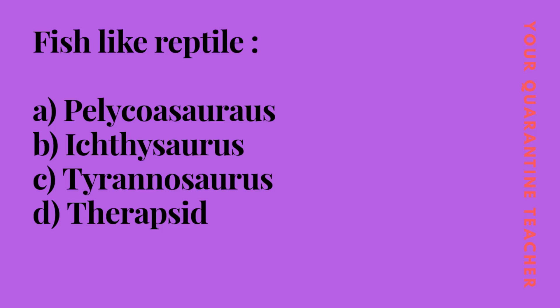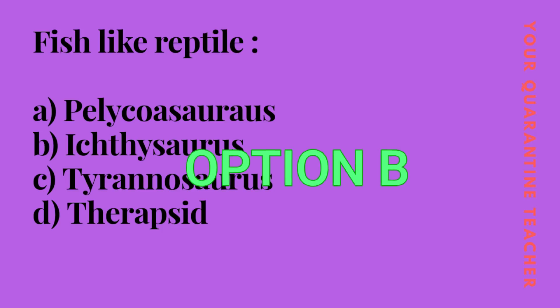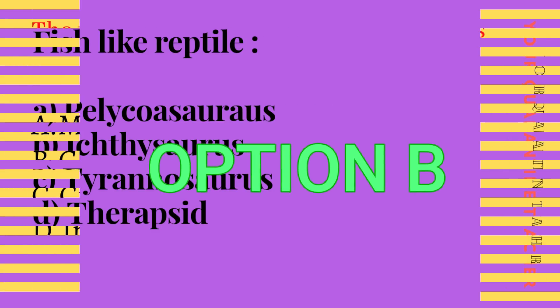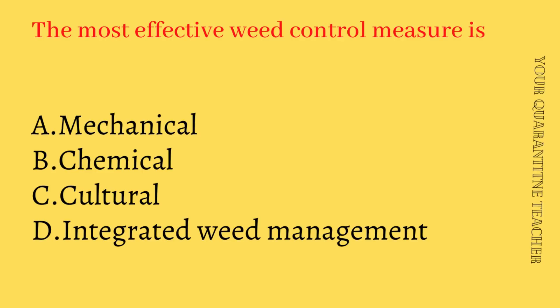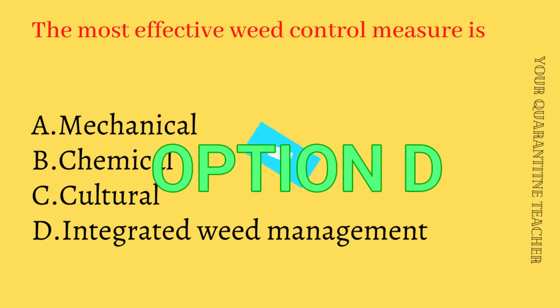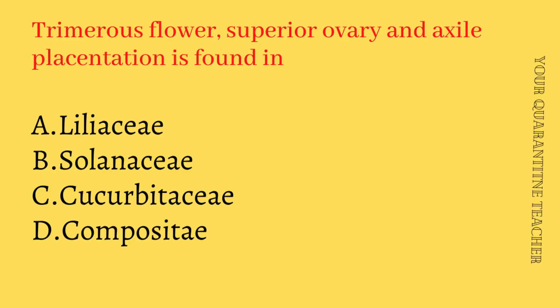Then, fish-like reptile — Option B is the correct answer. Next question: the most effective weed control measure is Option A Mechanical, Option B Chemical, Option C Cultural, Option D Integrated Weed Management. The answer is Option D Integrated Weed Management. Then, trimerous flower with superior ovary and axial placentation is found in Option A Liliaceae — correct answer.